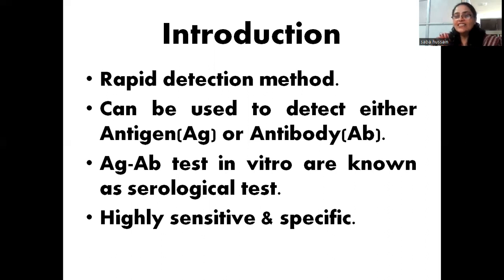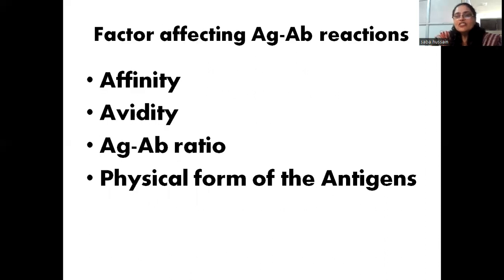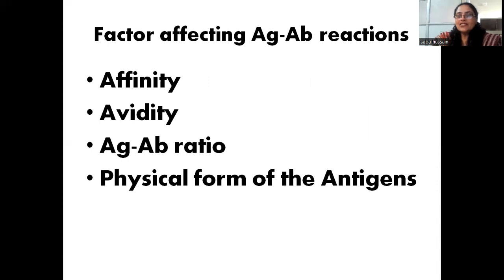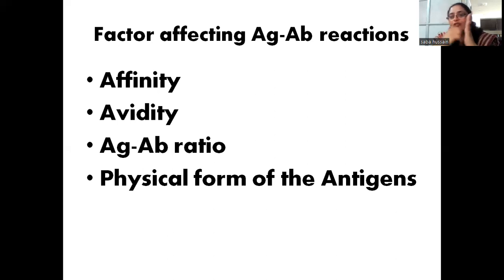It is very highly sensitive and specific. The factors affecting antigen-antibody interactions or reactions are, first, affinity. Affinity is the attraction which an epitope has towards the paratope. Remember: epitope is the unit site where an antigen binds to an antibody, and paratope is the site where an antibody will bind to a specific antigen. This antigen-antibody reaction takes place when there is chemical attraction between the epitope and the paratope.